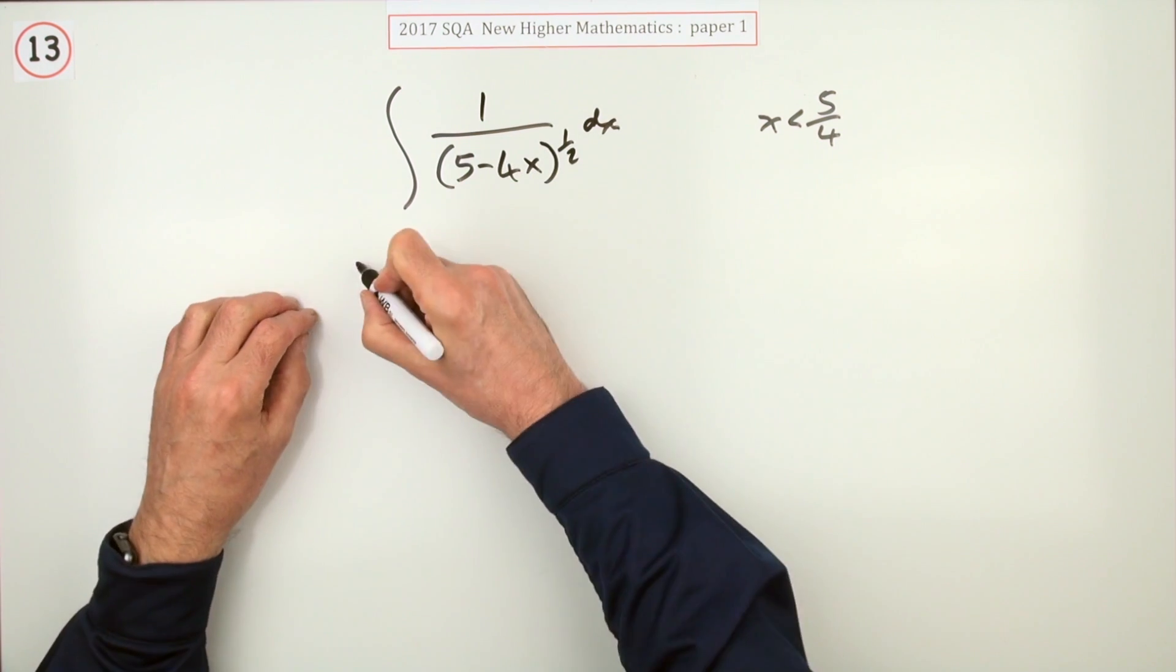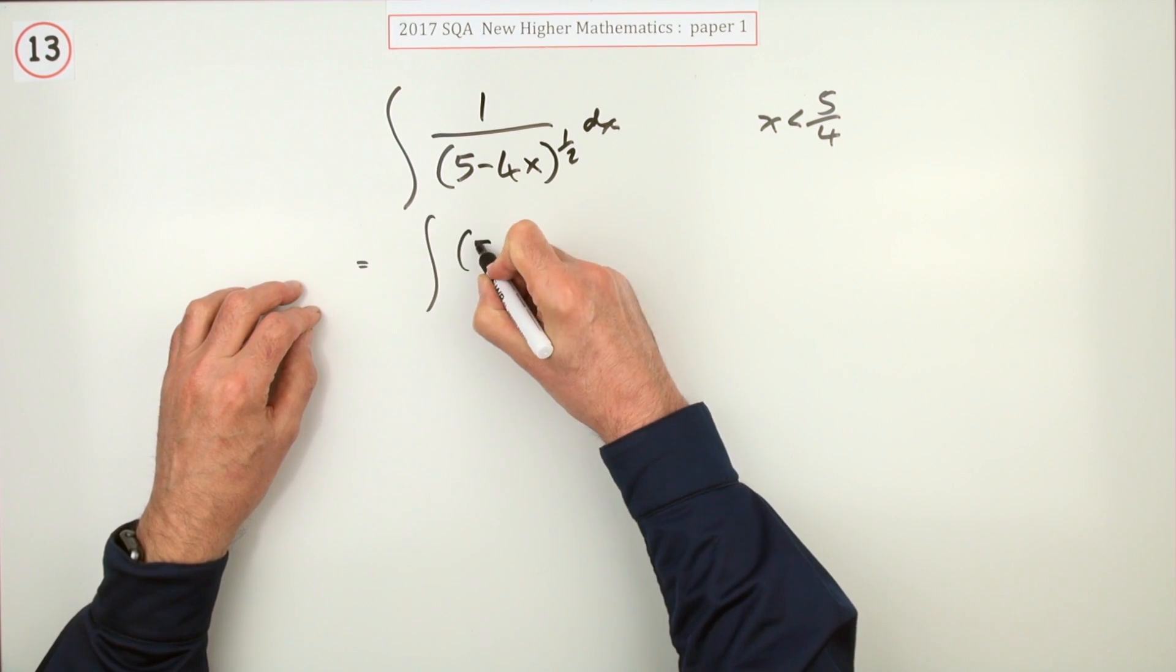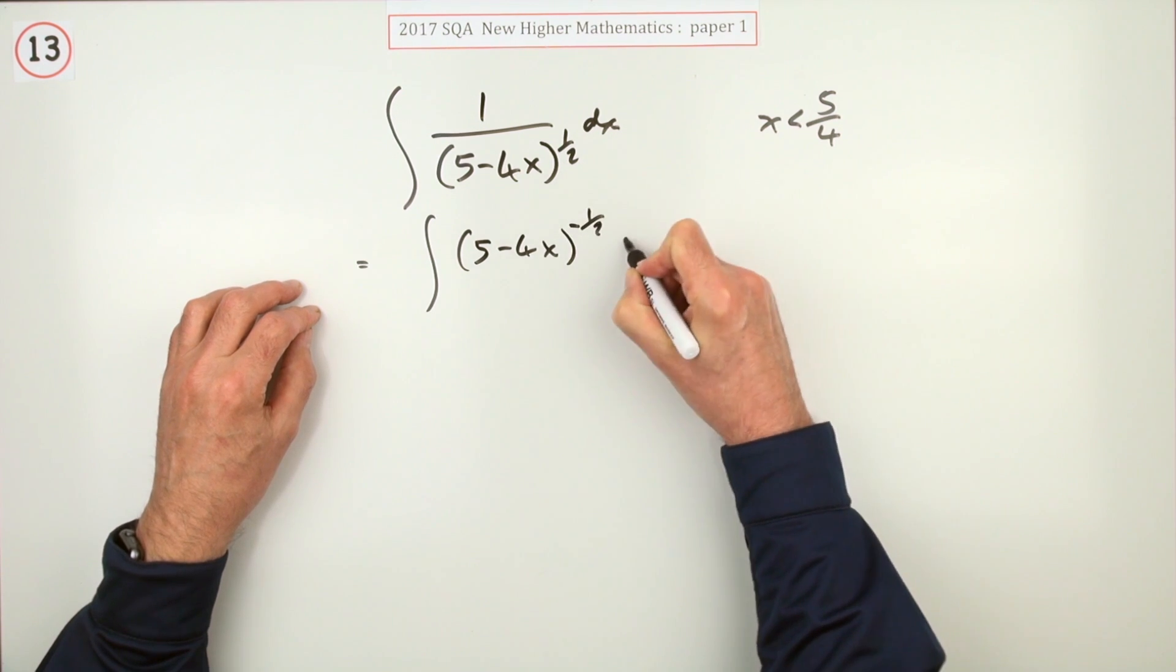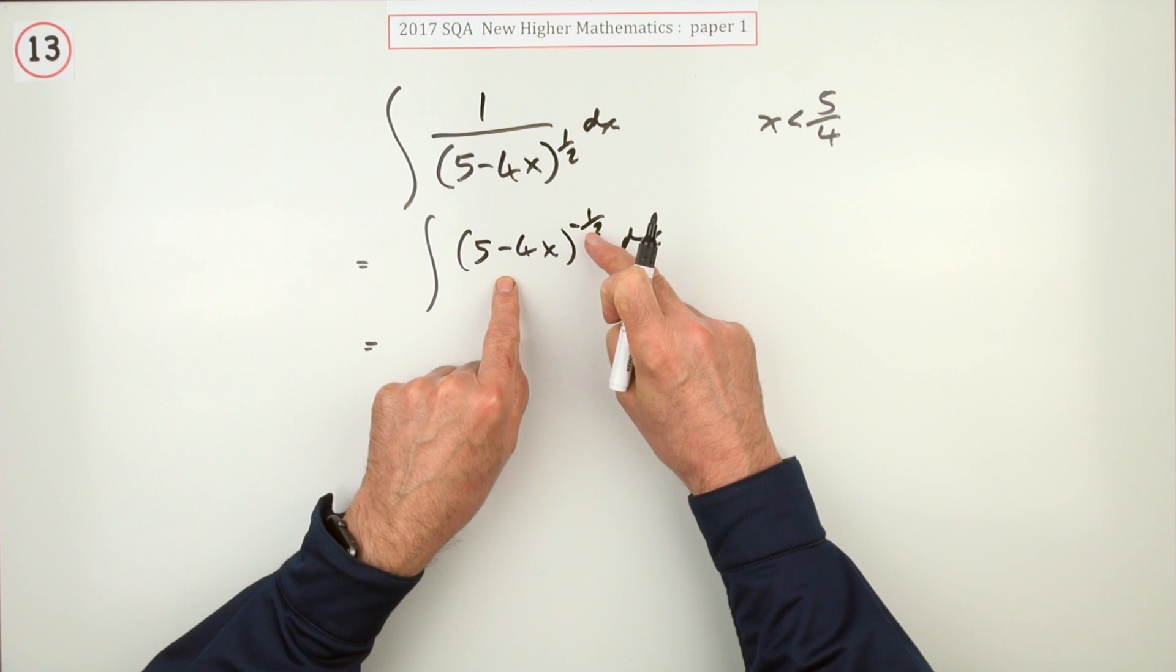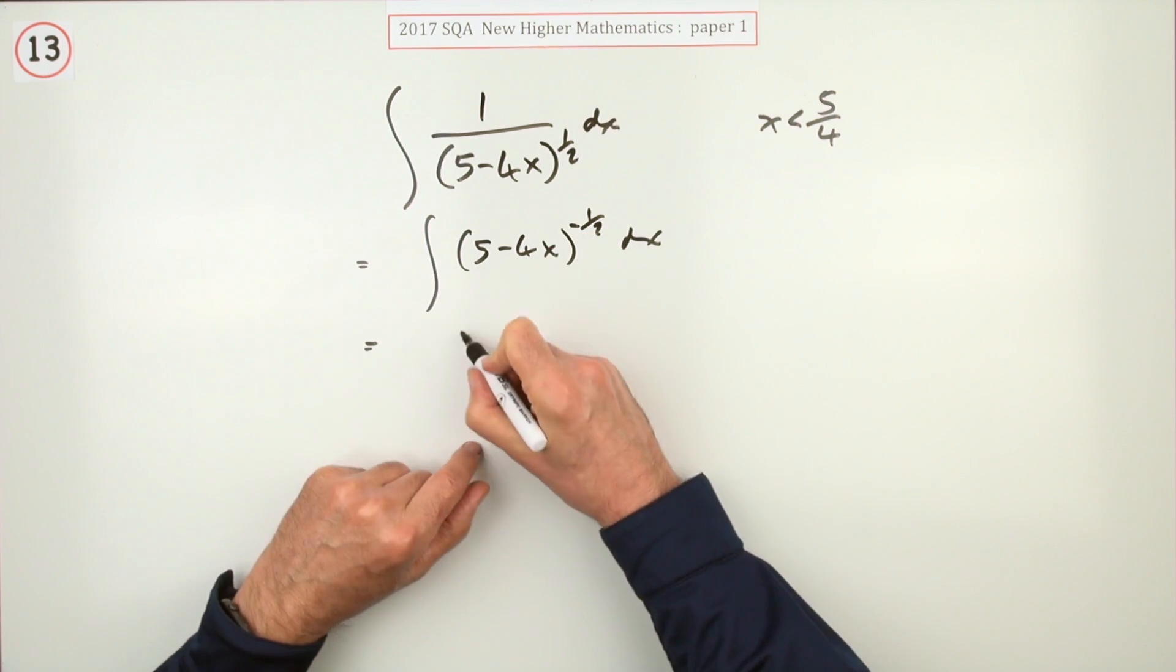Well, just write that in index form, so that's to the power negative a half. Now you see you've got a function of a function, but at least it's a function of a linear function, so that's one you can do when you're integrating at the Higher.